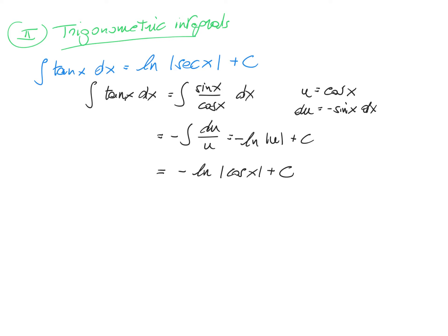Then we use basic formulas for logarithms. We know that ln of x to the power a is a times ln x. So this is actually equal to ln of cosine x to the power minus 1 plus a constant. Since 1 over cosine is secant, this is ln of secant of x plus a constant.